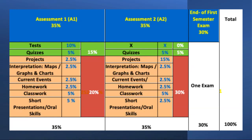A word or two about assessment. As you know, we have two terms throughout the year, and each term is split into two assessments. Assessment one makes up 35% of your grade and is a test-focused assessment. Assessment two makes an equal contribution of 35%, leading to a total of 70%, and is a project-based assessment.